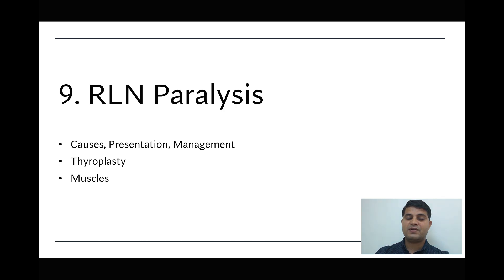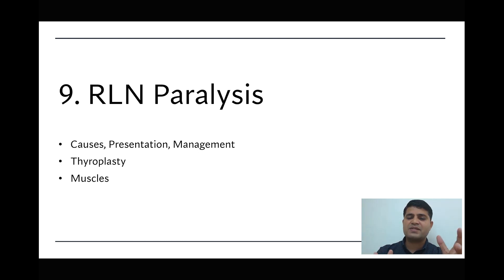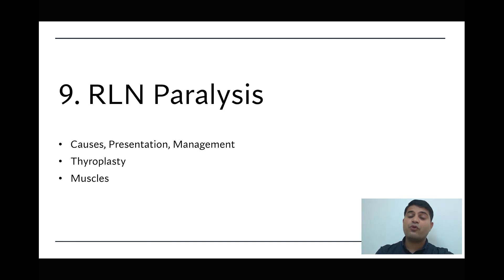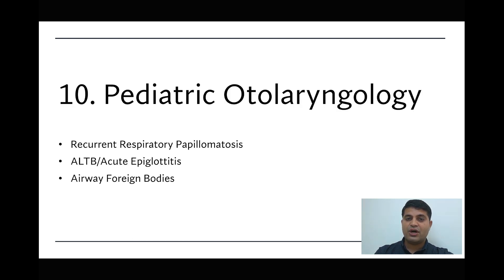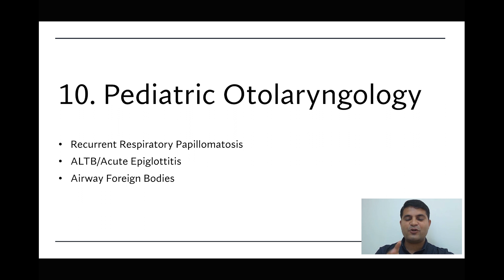The ninth important topic is recurrent laryngeal nerve paralysis. The two most important things are unilateral cord palsy and bilateral abductor cord paralysis. Only two laryngeal muscles are important: cricothyroid and posterior cricoarytenoid. Thyroplasty — also known as laryngeal framework surgery — is important, as voice change procedures are increasingly relevant clinically.